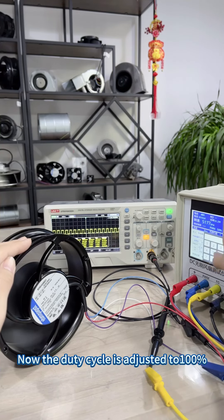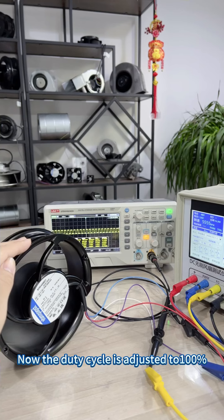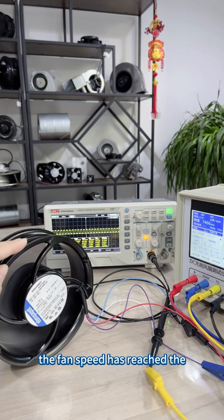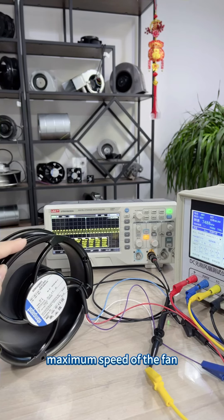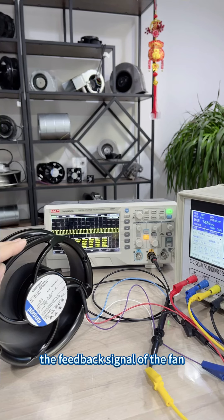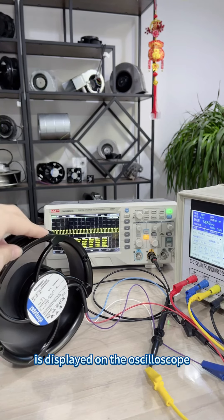Now, the duty cycle is 100%. The fan speed has reached the maximum speed. The feedback signal is displayed on the oscilloscope.